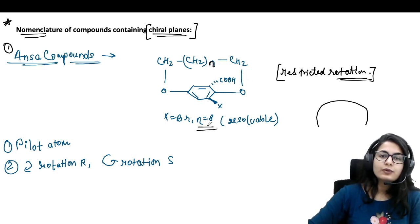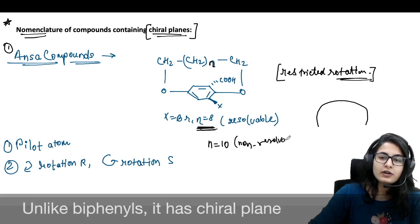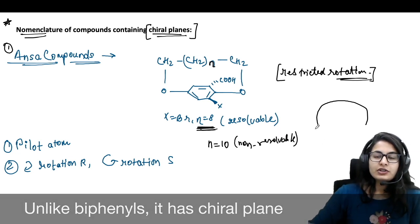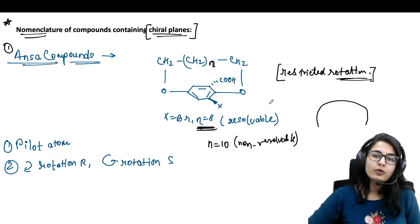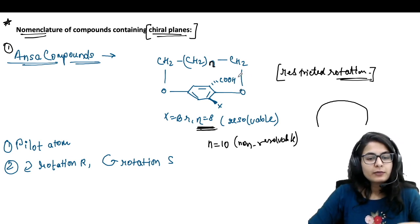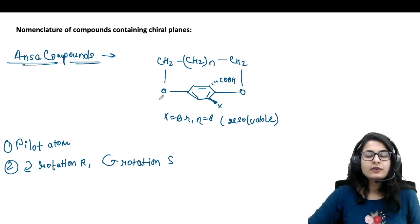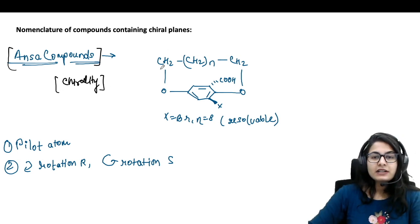The n value — that is the number of methylene groups — needs to be eight or less. If the n value exceeds eight, for example if it is 10, it will become non-resolvable, because now the chain is big enough to allow rotation. The benzene will rotate and the molecule becomes achiral.